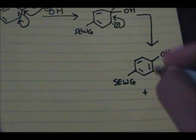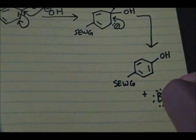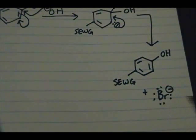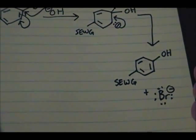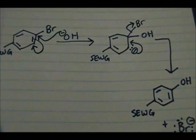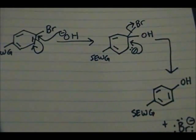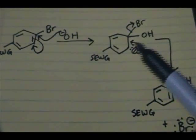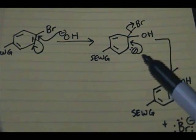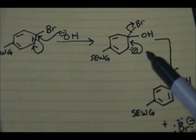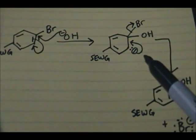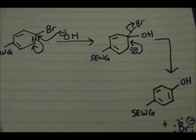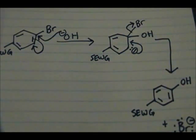Bromine now has eight electrons on it, giving it a negative formal charge. Some of you might be wondering why you need a strong electron withdrawing group in the ortho or para position relative to the leaving group. The main reason is to stabilize the negative charge. Carbons don't like to have a negative charge — there are too many electrons on that carbon. So you need an electron withdrawing group, moderate or strong, to pull away those electrons and help stabilize it.